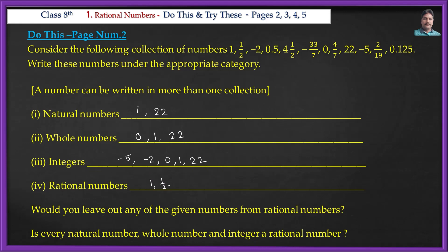Thus all given numbers — 1, -2, -2/1, 0.5, 4, 1/2, -33/7, 0, 4/7, 22, -5, 2/19, 0.125 — are rational numbers. Would you leave out any of the given numbers from rational numbers? Is every natural number, whole number, and integer also a rational number?